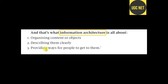The third point is providing ways for people to get to them. After describing, we have to provide ways — hints or indications — for how users can access information easily. In a library, for example, books are organized and described by section, and users are told: in rack 1 you get science books, in rack 2 you get computer books. Content is king but distribution is queen — so providing ways for people is essential.